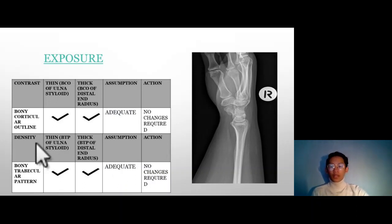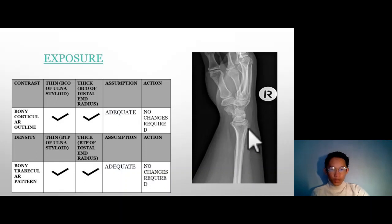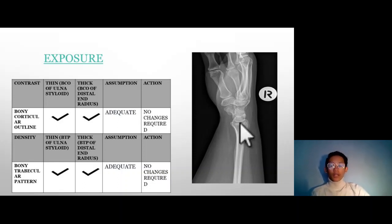Next, the density, which is assessed by the bony trabecular pattern. For the thin structure — the ulna styloid — and the thick structure — the distal radius — you can still see the bony trabecular pattern of both. Therefore, the density is adequate and no changes are required in this image.